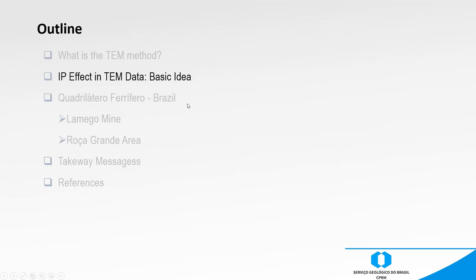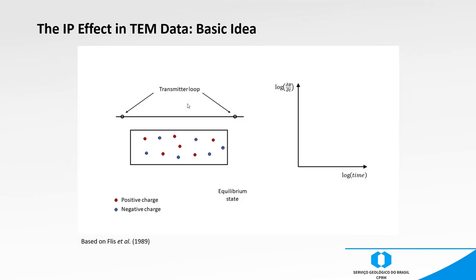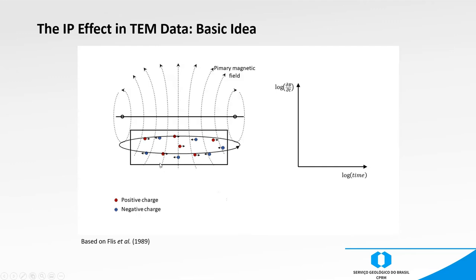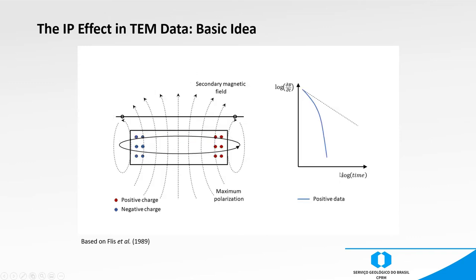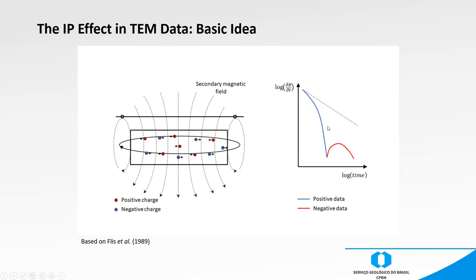The IP effect in TEM data happens when we have a polarizable environment, which is polarized by the diffusion process of the TEM method. Once we are measuring it, we can get a steep decay — the blue curve — different from the straight line as seen in the previous slide. Once we keep measuring, we may also get negative values, negative measurements in the late times of the curve, represented here in red, associated with the discharging process of the environment.